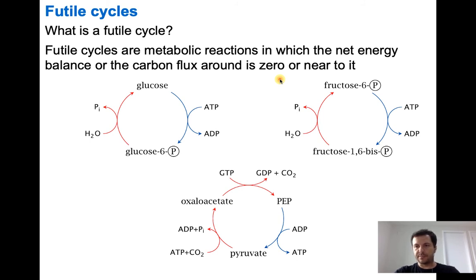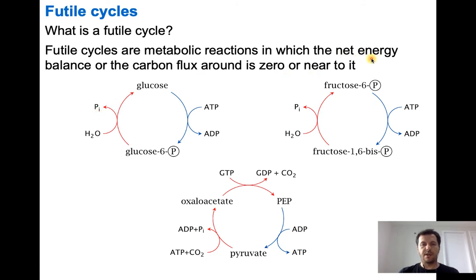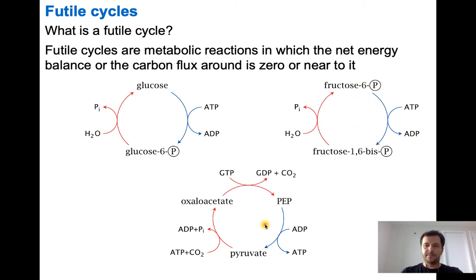For example, you have glucose that can be transformed to glucose-6-phosphate, and glucose-6-phosphate can also be transformed back to glucose. Here you have consumption of ATP and production of ADP going one way, but phosphate is produced going the other way, so the net ATP balance is zero. The same applies to the fructose-6-phosphate to fructose-1,6-bisphosphate cycle.